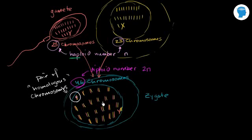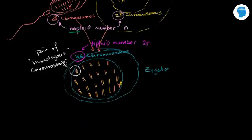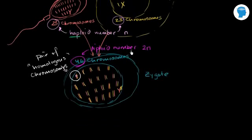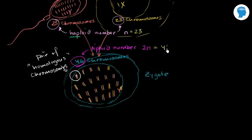How does that actually happen? Now that this zygote has the diploid number of chromosomes — referred to as 2n, where n is the haploid number — in the case of human beings, n is 23, and 2n would be 46 chromosomes. I have my full contingency of chromosomes here.